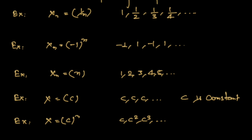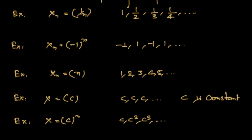Another sequence is xₙ = (−1)ⁿ, and this sequence has a unique property: it oscillates. For n equal to 1 it is −1. For n equal to 2 we get 1. Each time we get an odd power we get −1, and each time we get an even power we get 1.